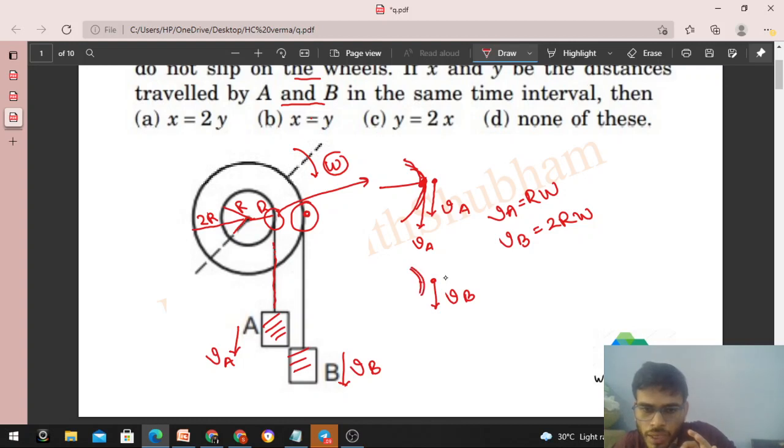...will also move downward with vb. And this particle's distance from the common axis of rotation is 2r. So vb equals omega times 2r.